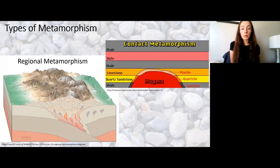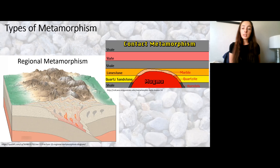The two main types of metamorphism are regional and contact. Regional metamorphism typically occurs at plate boundaries, metamorphosing a large regional-scale amount of rocks, whereas contact metamorphism is a bit smaller scale.